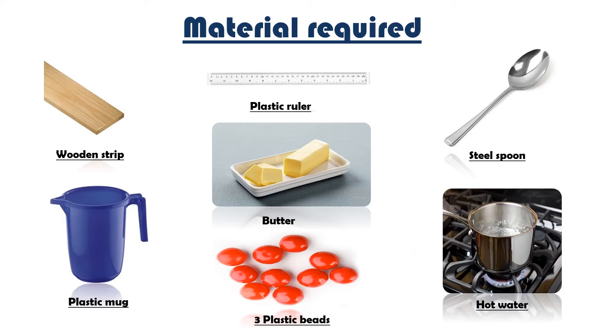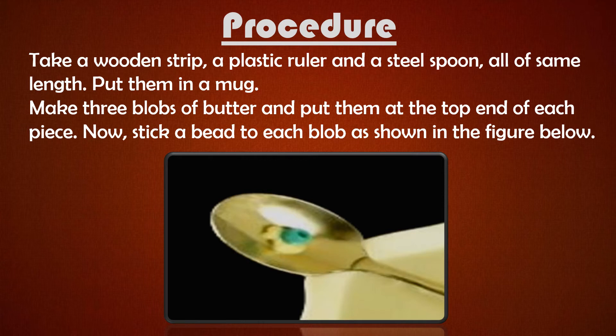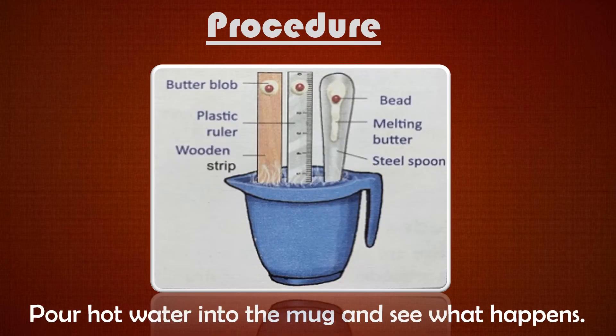For this activity you will require a wooden strip, a plastic ruler, a steel spoon, butter, a plastic mug, three plastic beads, and hot water. To perform the activity, take a wooden strip, a plastic ruler, and a steel spoon all of the same length, and put them in a mug. Make three blobs of butter and put them at the top end of each piece, then stick a bead to each blob as shown in the figure. Now pour some hot water into the mug and see what happens.